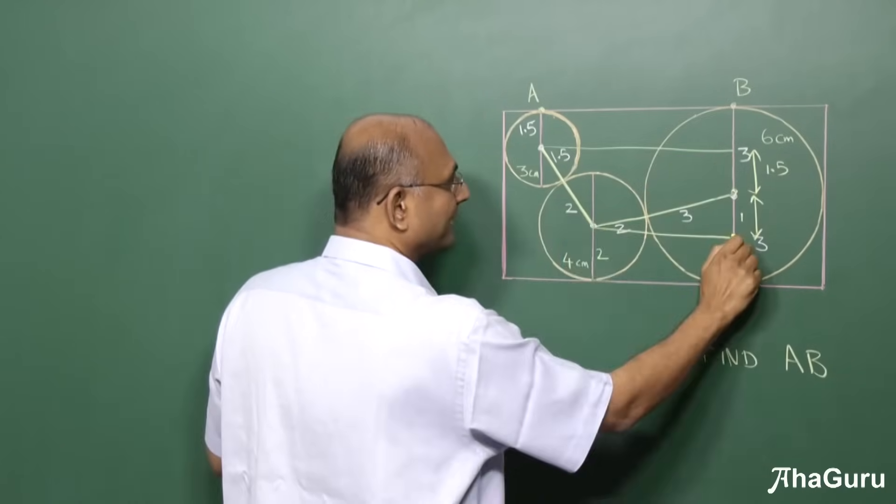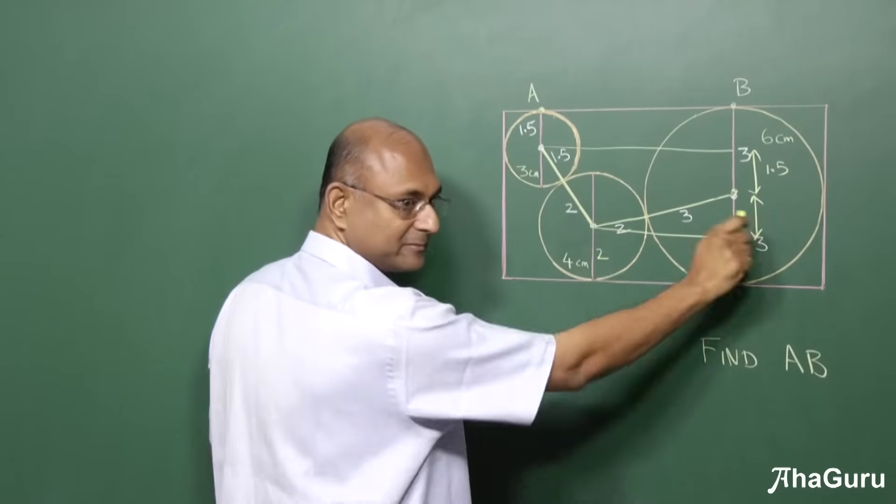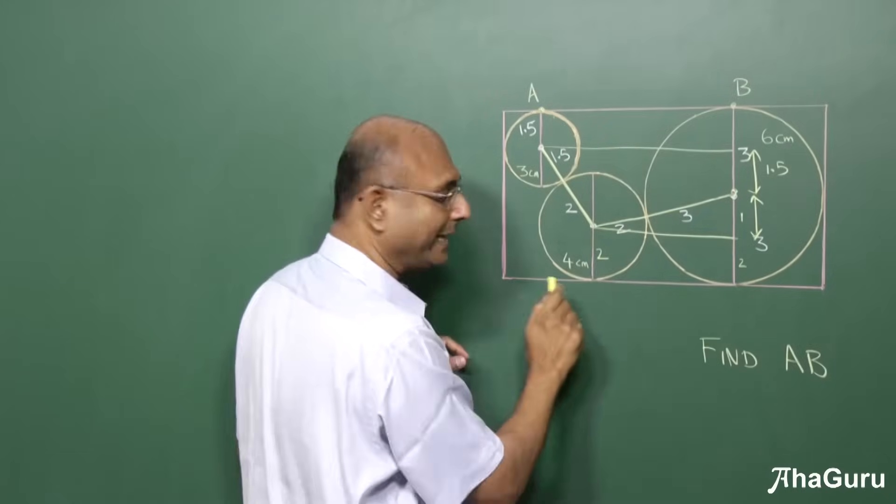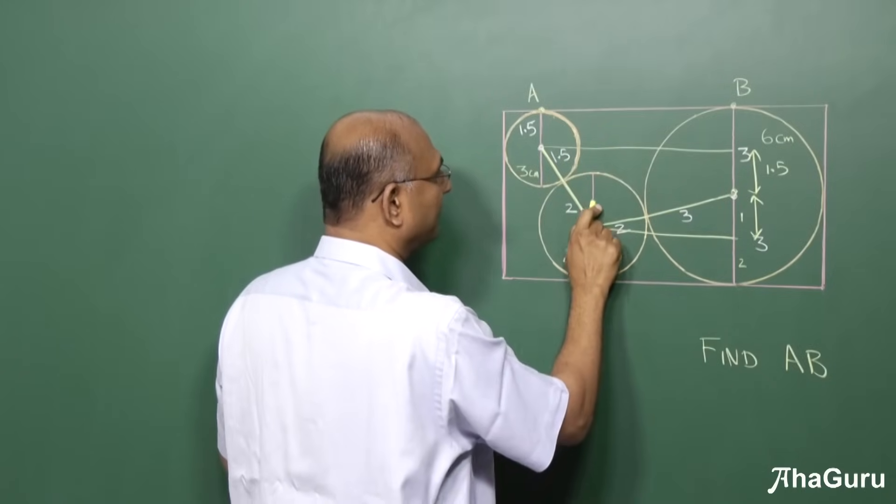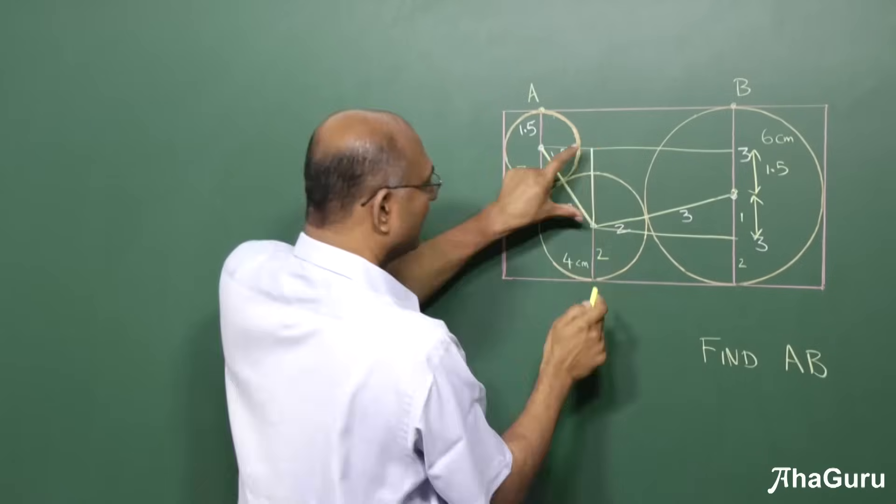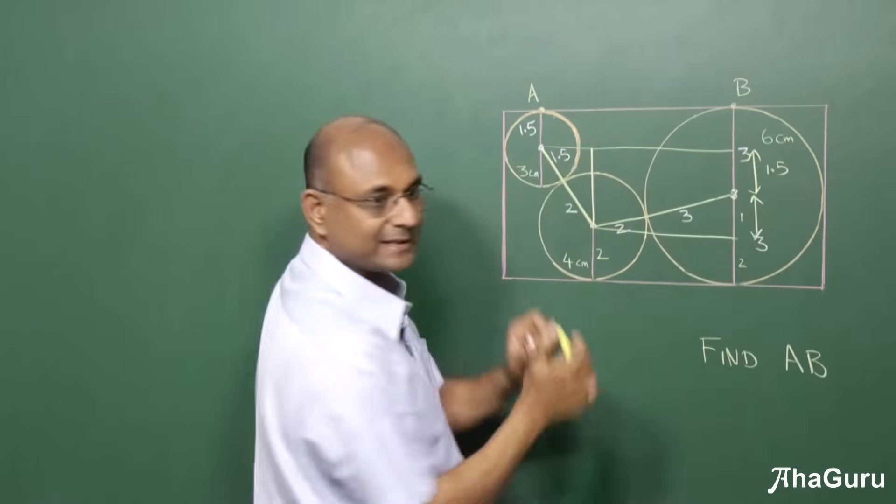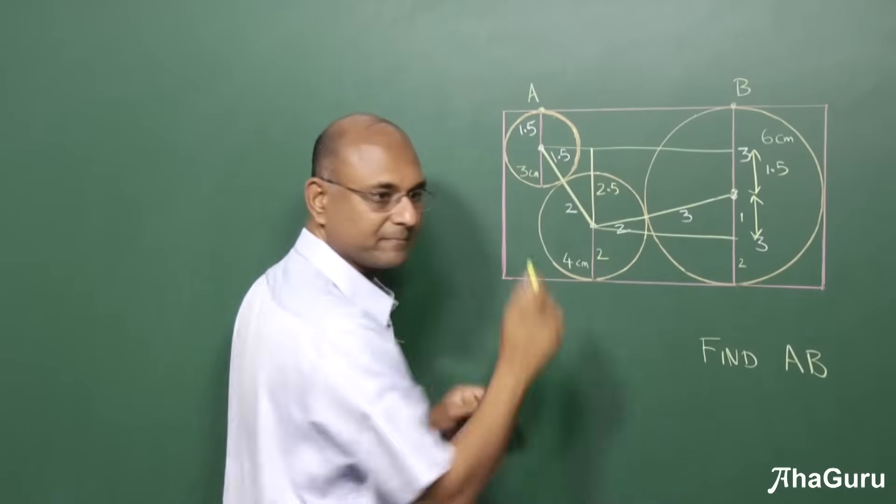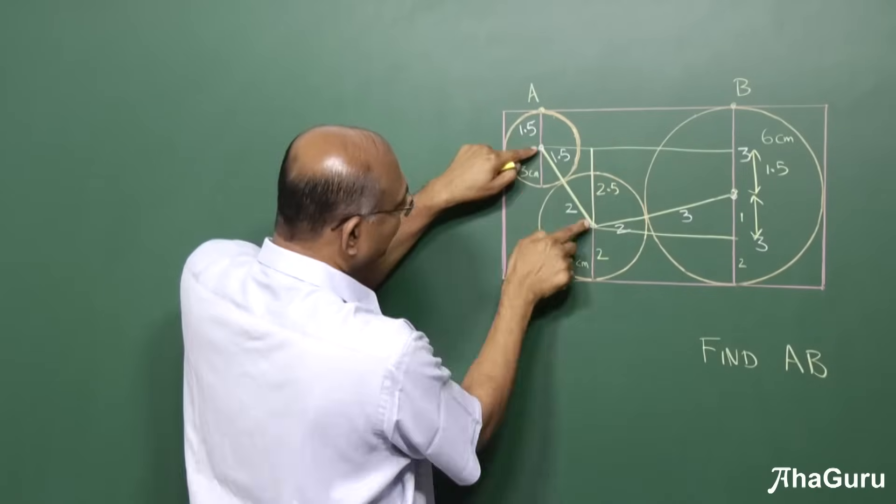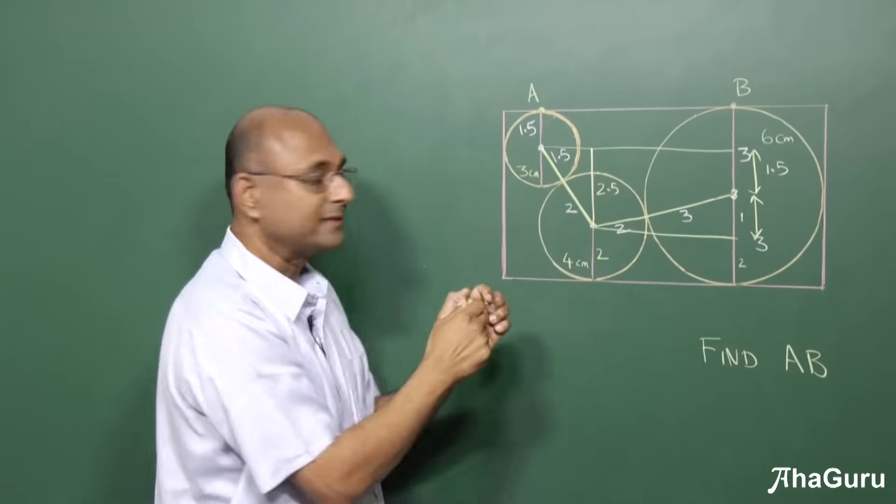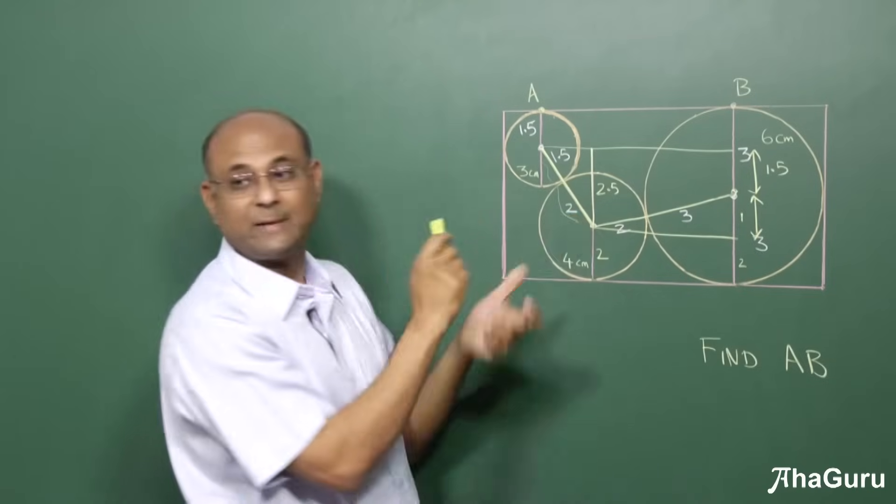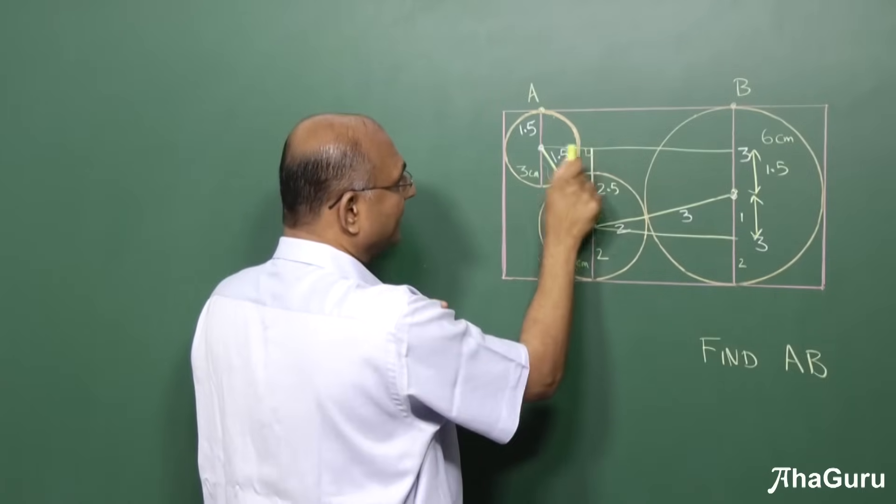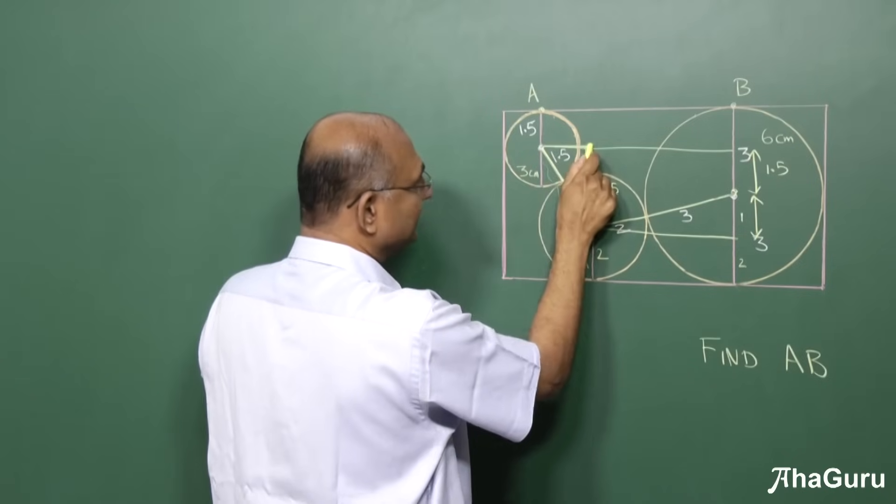So if that is 2.5, look at this. This point is the same as this point in terms of the horizontal position. So if I draw a line from here to there, this must be the same length as that piece. So this is 2.5, so this must also be 2.5. But this is 1.5 and this is 2, so what is this total length? This is 3.5. So if this is 3.5, this is 2.5, can you see that this is a right angle triangle?